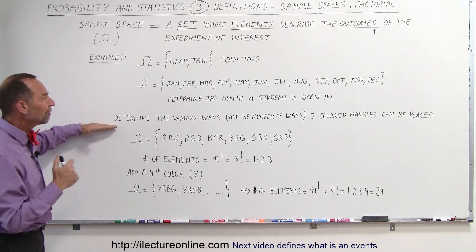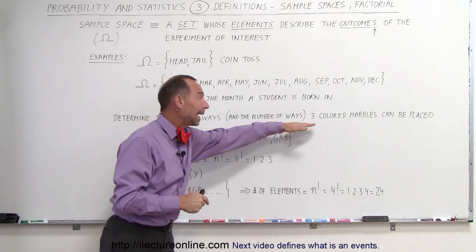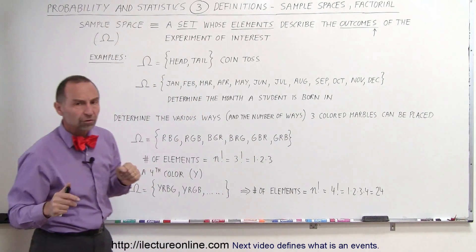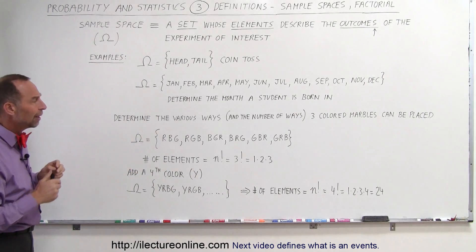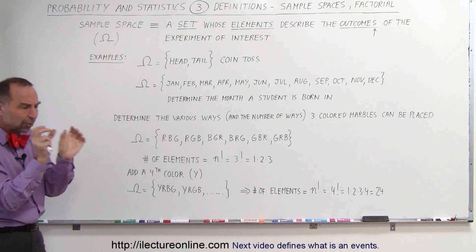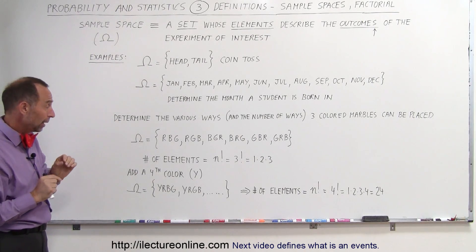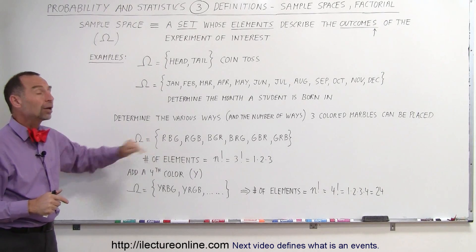Now determine the various ways and the number of ways that we can line up three colored marbles. That's a different kind of sample space, so what are all the possible ways in which we can take three different colored marbles and line them up in a certain order? Well, let's say we have a red one, a blue one, and a green one.